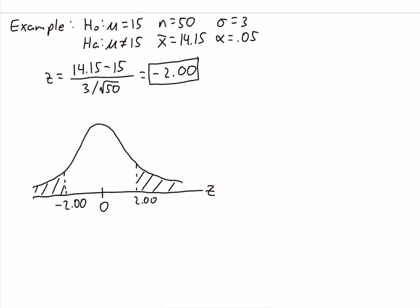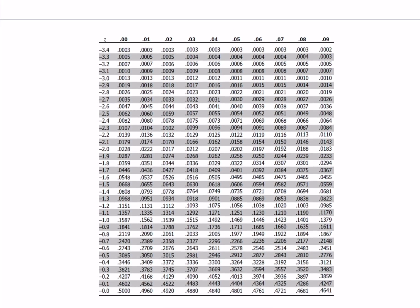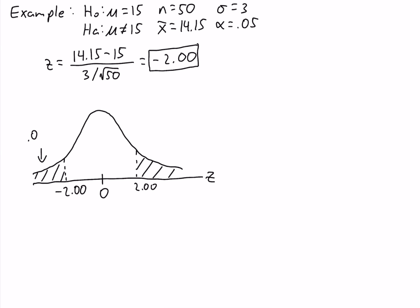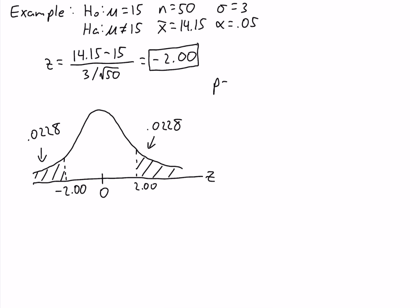We can find one of the tail areas and double it. Looking at our z-table for negative 2.0 matched with 0.00, the corresponding area is 0.0228. This is the area to the left of negative two. Since the curve is symmetric, the area to the right of positive two is also 0.0228. So our p-value is 2 times 0.0228, which equals 0.0456.